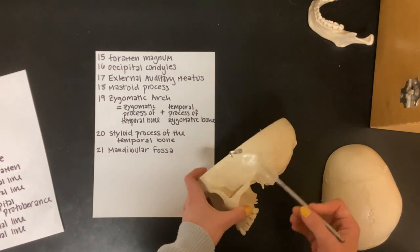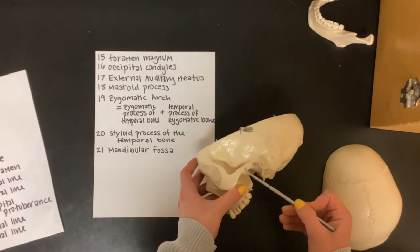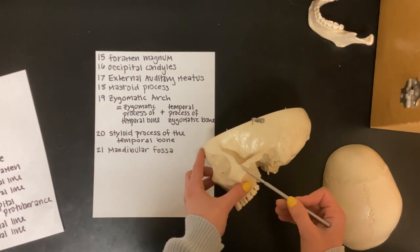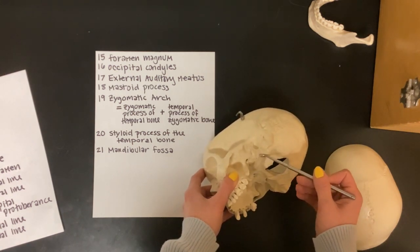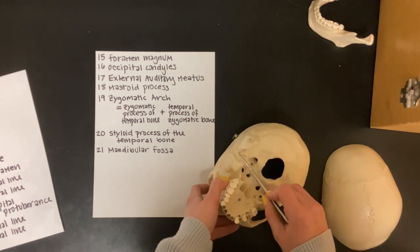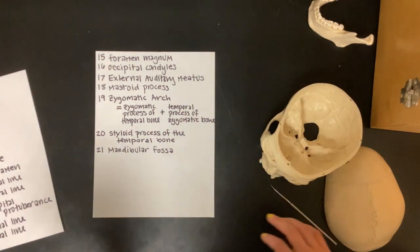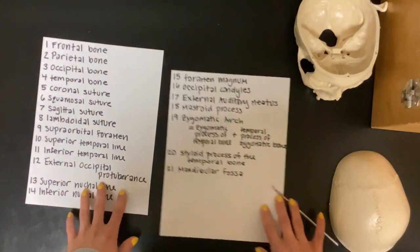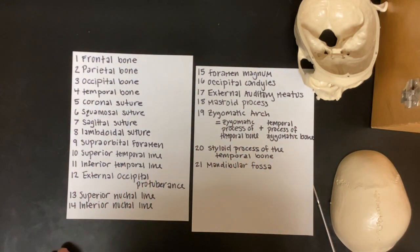Eighteen is the mastoid process. Nineteen is the zygomatic arch, being made up of the zygomatic process of the temporal bone and the temporal process of the zygomatic bone. Twenty is the styloid process of the temporal bone, and twenty-one is the mandibular fossa. I hope that was helpful.